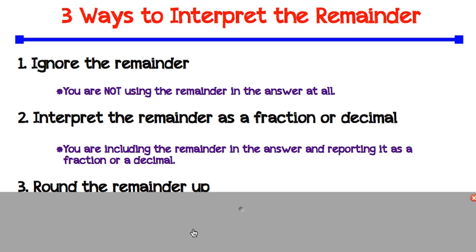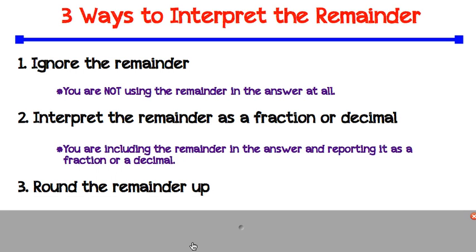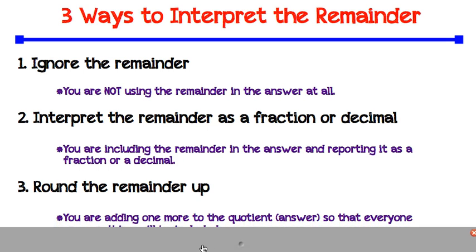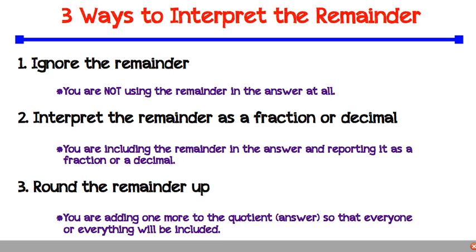Lastly, you can round the remainder up. This means that you are adding one more to the quotient or the answer so that everyone or everything will be included.